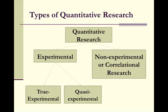When you get into quantitative research, which is of course dealing with numbers, you have two major categories: experimental and non-experimental, or correlational research.